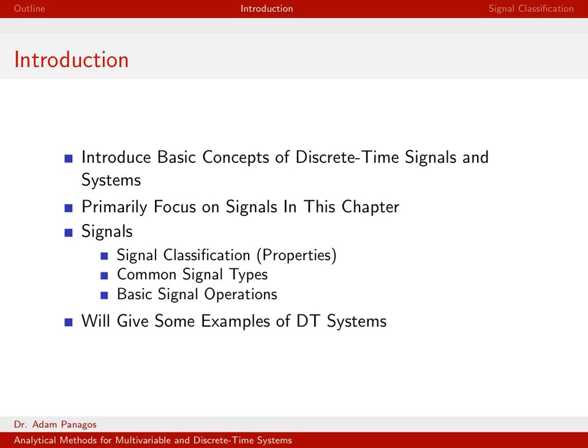We'll go through this list of definitions and characteristics that signals can take on. Really the goal of this class is to introduce some very basic concepts related to discrete time signals and systems. And what we're primarily going to do in this chapter is look at signals. The signal classification problem is what type of properties does a signal have.